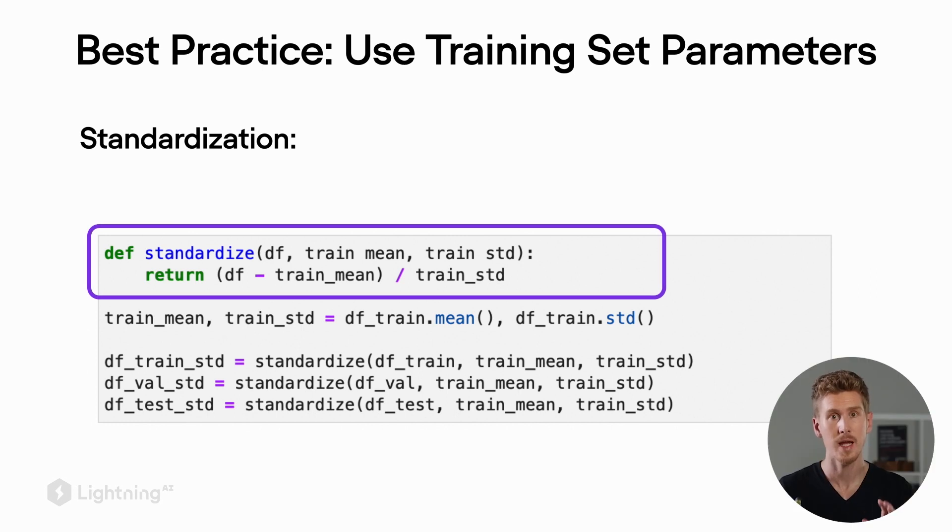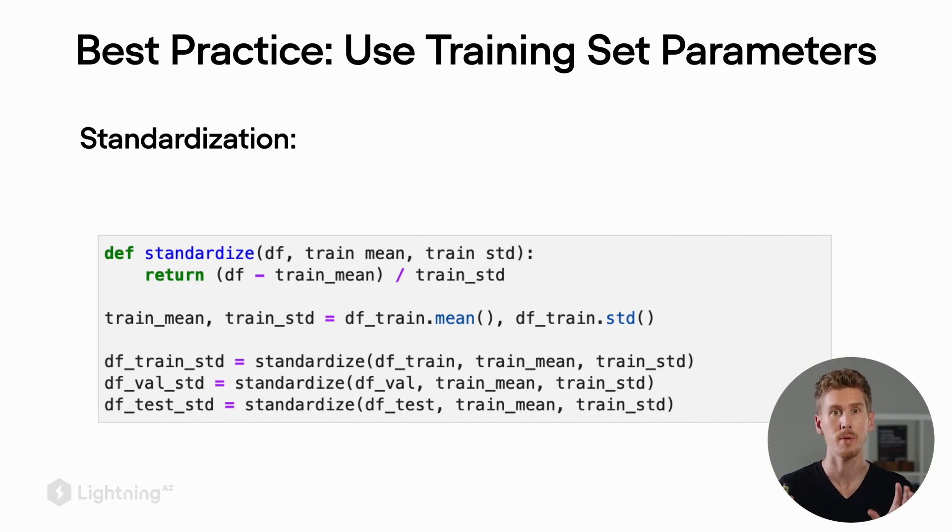And we do the same thing for standardization. If we have the standardization function here, we again derive the mean and the standard deviation from the training set and then apply these to scale also the validation and the test set. So this is basically all there is to it when it comes to normalization.